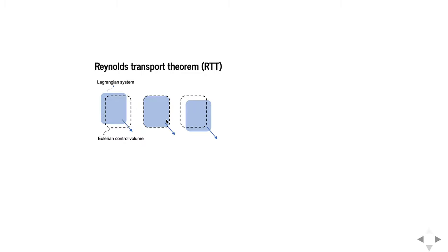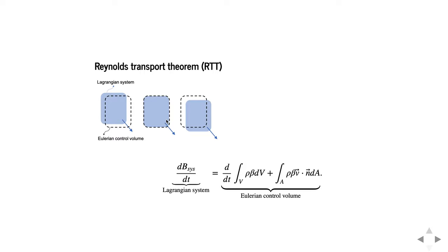This is illustrated in the figure where we have a Lagrangian system moving through an Eulerian control volume. At any given time, as in the middle picture, we treat the system and the control volume as being collocated — they occupy the same space. But where the control volume has nominally fixed boundaries, the system is moving through it. So we need the Reynolds transport theorem to connect these two things.